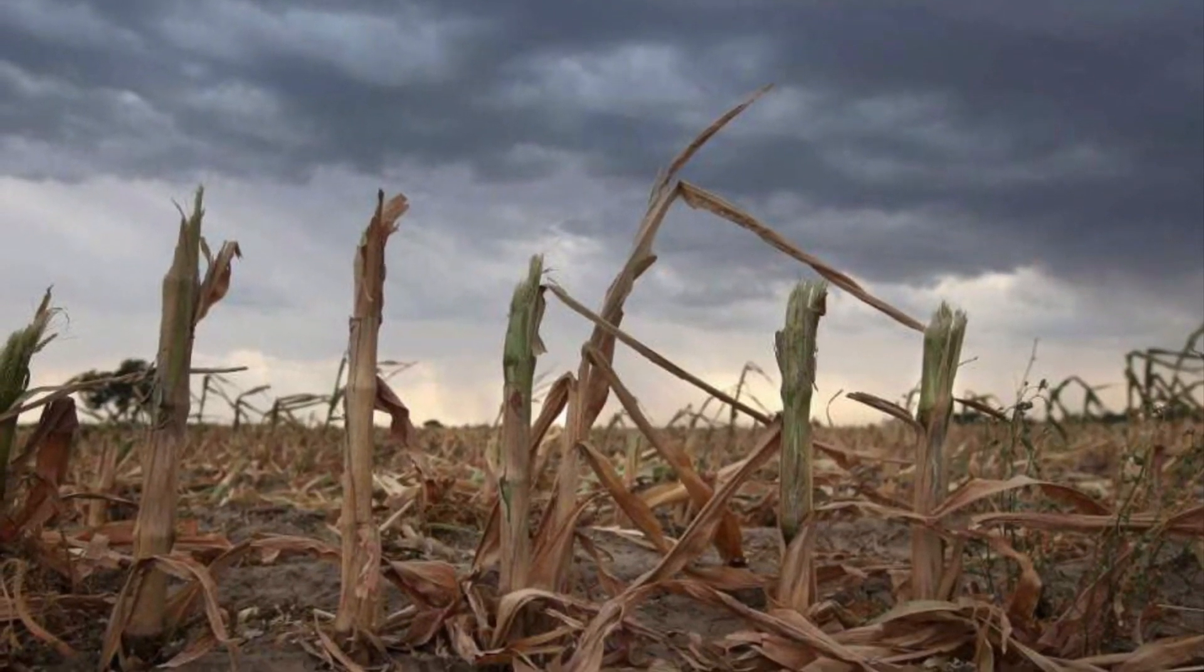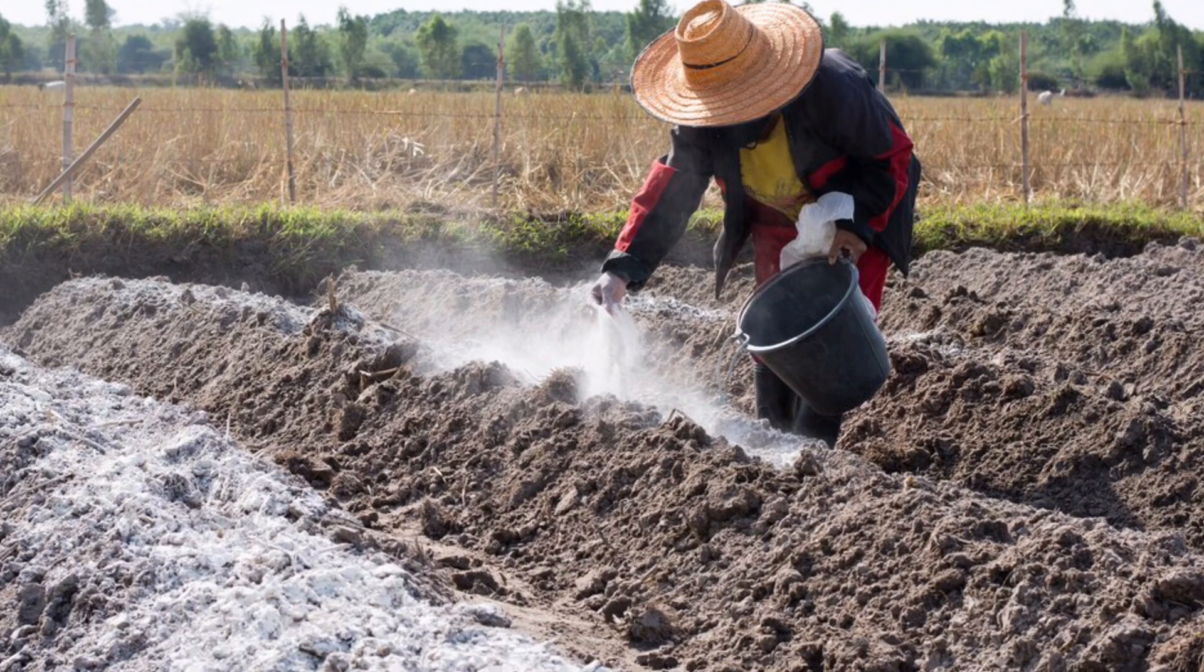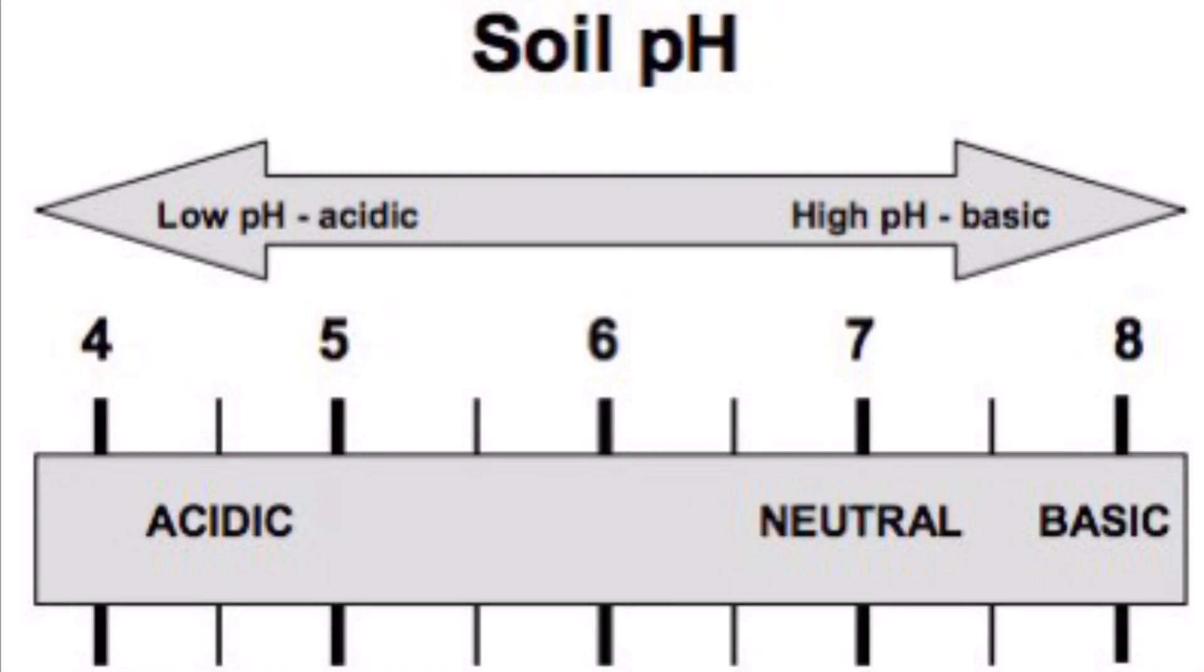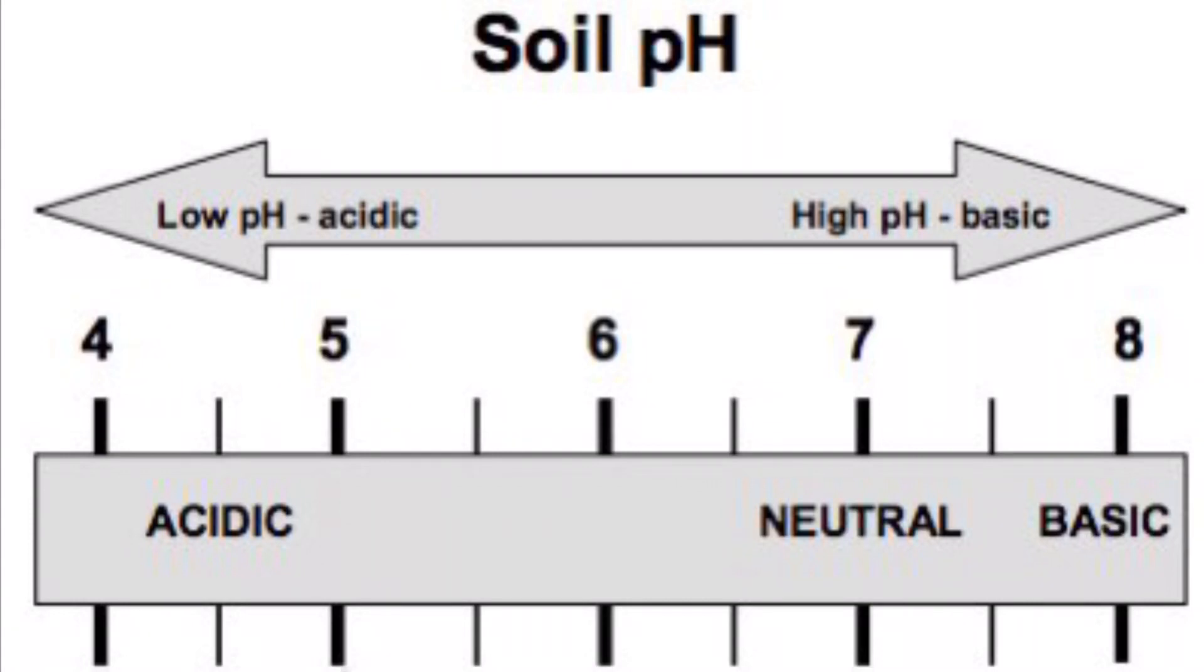Therefore, a solution to solve this problem is by having farmers lime the soil using a base known as calcium carbonate. Calcium carbonate raises the pH of the soil and balances the high acidity in the soil.